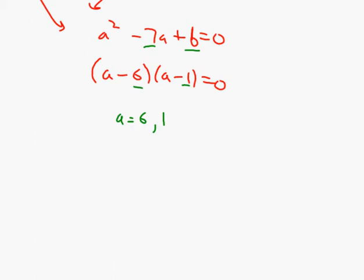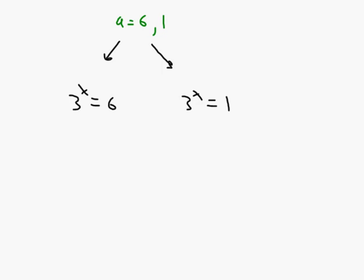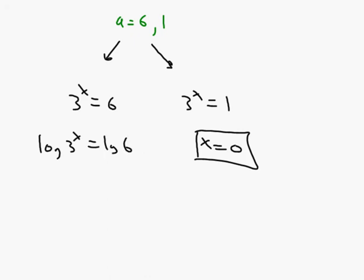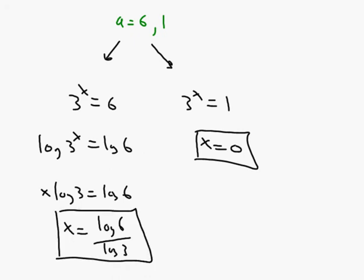We're not solving for a, we're solving for x. So we get two equations: 3 to the x equals 6, or 3 to the x equals 1. By inspection, 3 to the zero power is 1, so x equals 0. For 3 to the x equals 6, take the log of both sides: x log 3 equals log 6, so x equals log 6 over log 3.